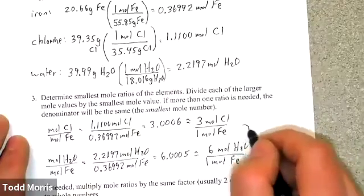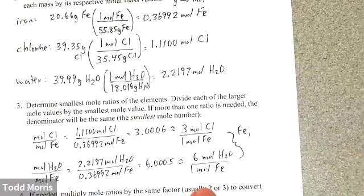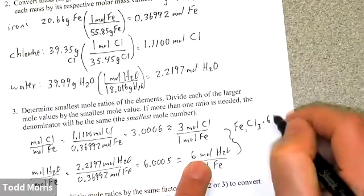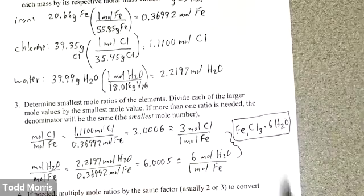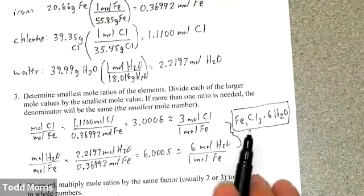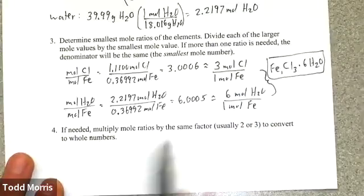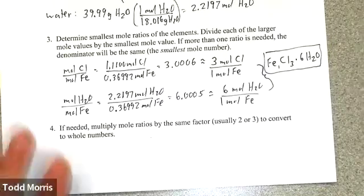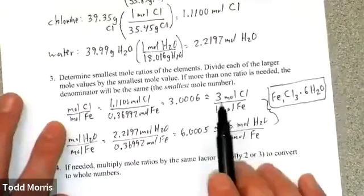Putting it all together: for every 1 mole of iron, we have 3 moles of chlorine and 6 moles of water. So this compound has the formula FeCl₃·6H₂O, and its name is iron(III) chloride hexahydrate. Because the ratios came out very close to whole numbers, we can skip step 4 — there's no need to multiply by an additional factor.